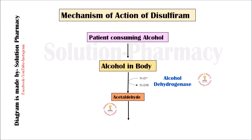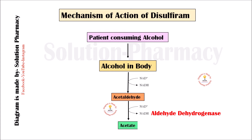This acetaldehyde is then further metabolized in the presence of the enzyme aldehyde dehydrogenase and coenzyme NAD. The NAD accepts hydrogen from the acetaldehyde and is converted into NADH, while the acetaldehyde is oxidized and converted into acetate. This acetate is easily eliminated by the body, and this is how the normal metabolism of alcohol takes place.